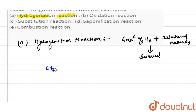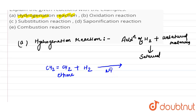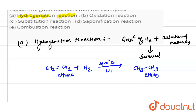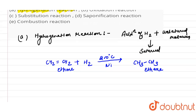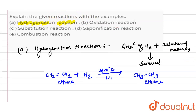For example, if we take ethene, which is an unsaturated molecule, and add hydrogen to it in the presence of nickel at 200 degrees Celsius, the hydrogenation reaction occurs and we get a saturated molecule, ethane (CH₃–CH₃). This type of reaction is known as the hydrogenation reaction.